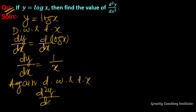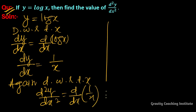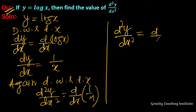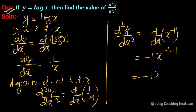d²y/dx² equals the differentiation of 1 upon x, which equals the differentiation of x to the power minus 1, so equal to minus 1 into x to the power minus 2, giving the answer minus 1 upon x square.